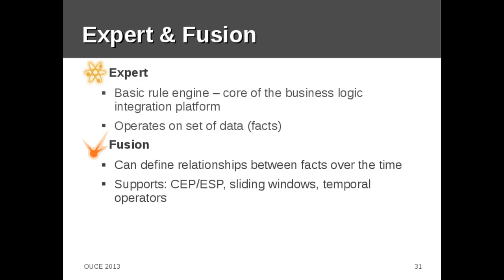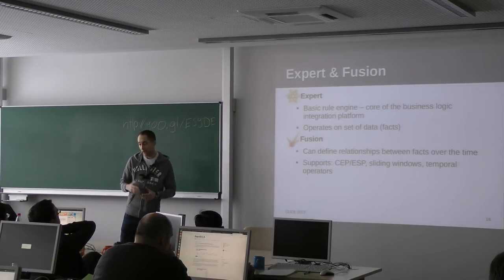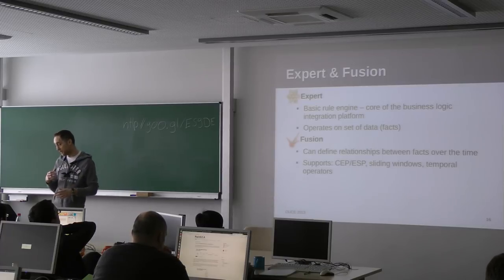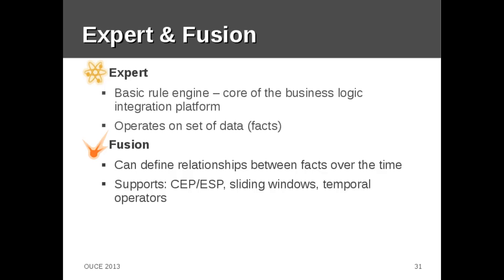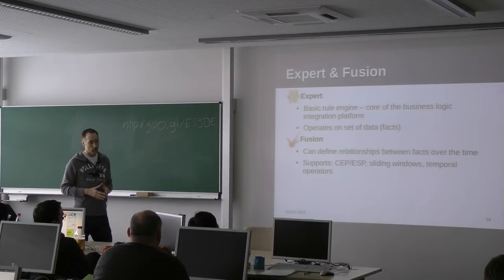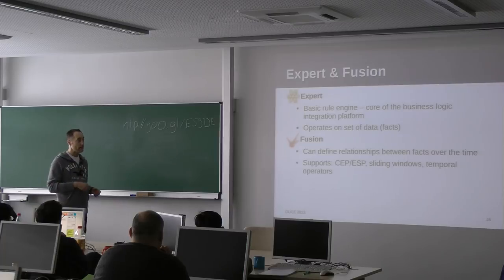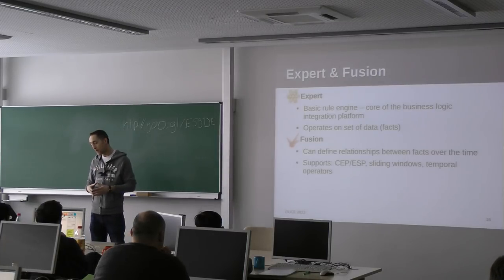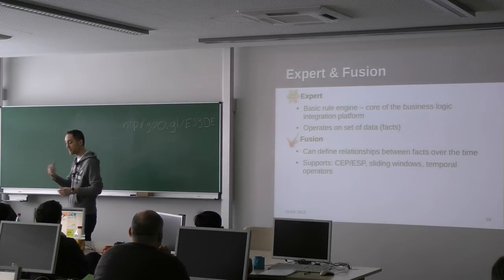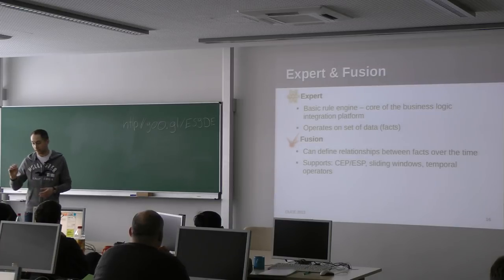Expert is the basic rule engine — the core of the business logic integration platform. It operates on a set of data called facts, and a fact in the context of OpenNMS is mostly an event. Fusion can define relationships between facts over time and supports complex event processing, also called event stream processing. It has sliding windows and temporal operators. A typical use case for Fusion: you only want to generate an event when your CPU is over 100% five times in 60 seconds.